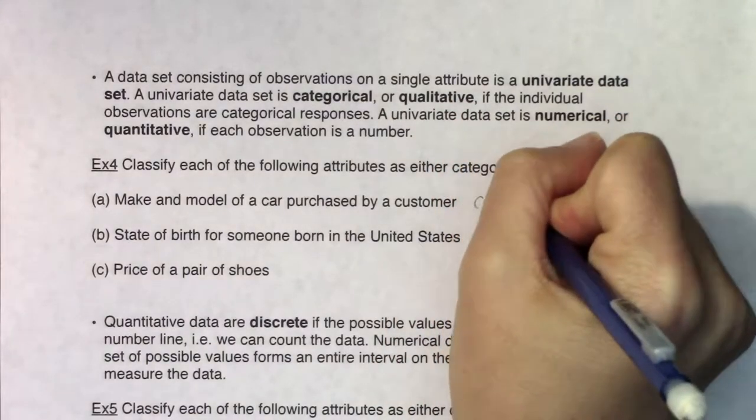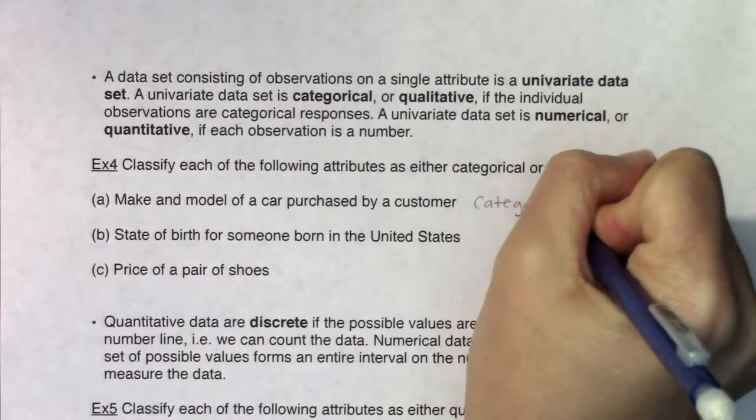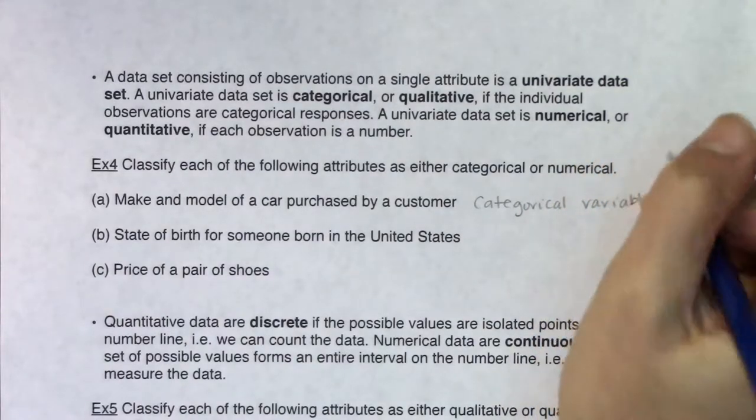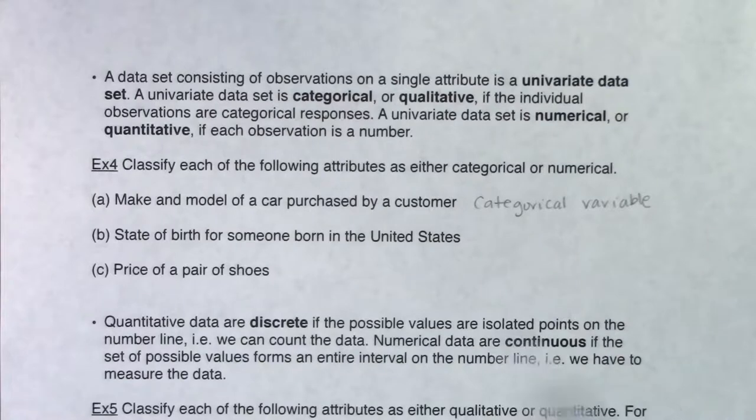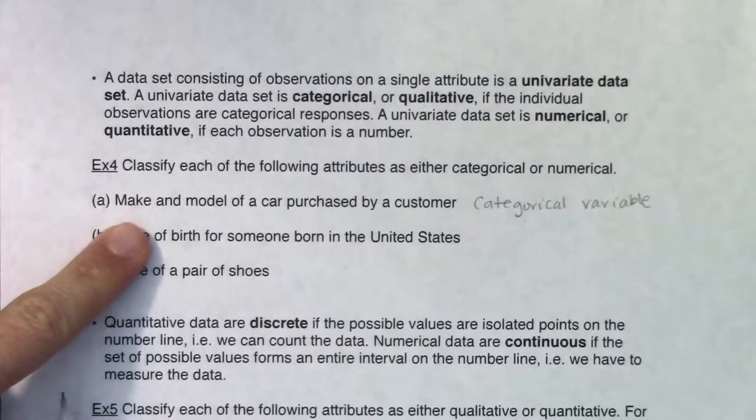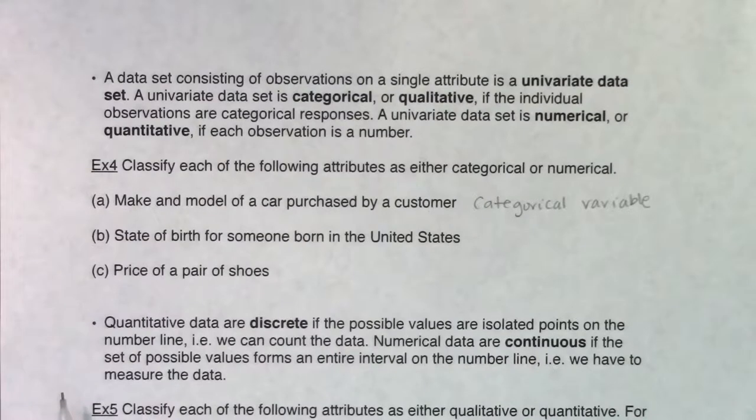If I went around the classroom and asked each student what was the make and model of your car, they would give me different word answers - different phrases. Honda Accord, Nissan Sentra, a Prius or whatever it is. We could keep track of the frequencies of each of those, but it's categorical. That's the type of variable in play when we're talking about the make and model of a car.